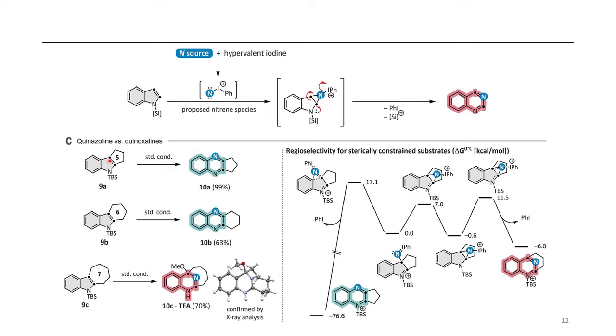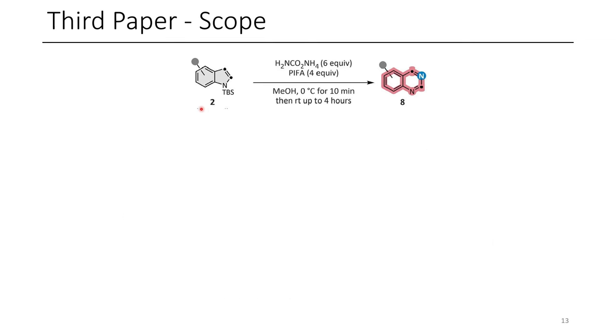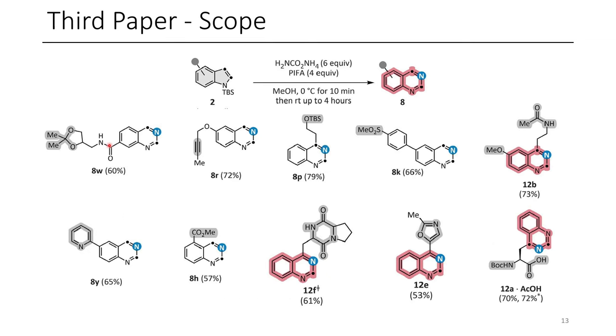This is then able to undergo a rearrangement through the elimination of the silane protecting group and through the extrusion of iodobenzene, affording their quinazoline product. Now, if they had blocked that position somewhat, they could get a different insertion forming a six-membered ring where the nitrogen is a piperazine. And so they did some studies to see why that formed, and I'd encourage you to check out their paper to read more about that. When they did this with a seven-membered ring, it was too strained, and they ended up having it trapped by methanol. The scope of this paper is pretty decent. Here you can see several examples where they have this ketal, this amide, this alkyne, a TBS-protected alcohol, sulfones, as well as derivatives of melatonin, derivatives of tryptophan, and several other interesting scaffolds that it's definitely impressive to see. So this is really cool chemistry, and I'd love to see this getting used in some med chem discovery campaigns moving forward.